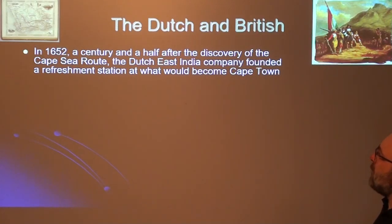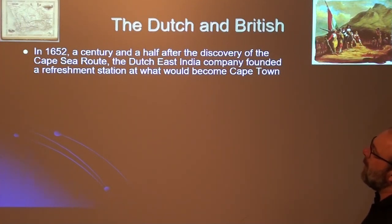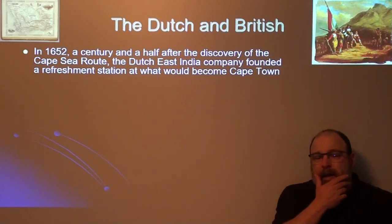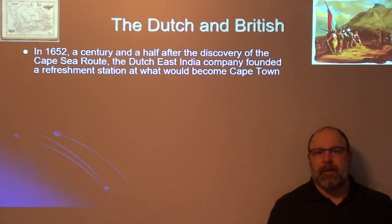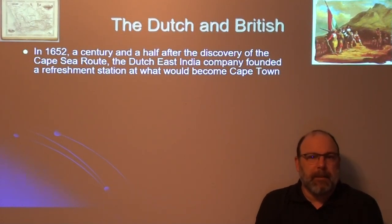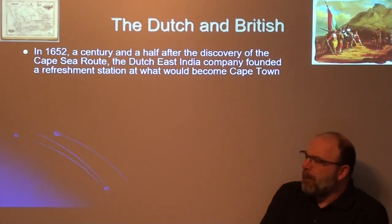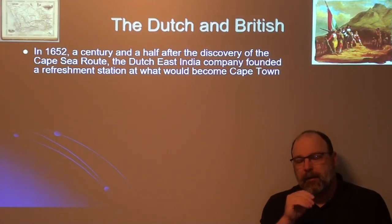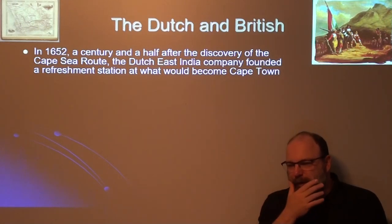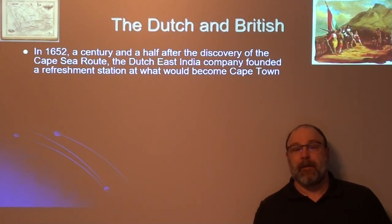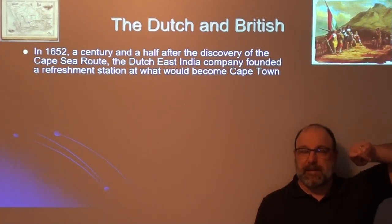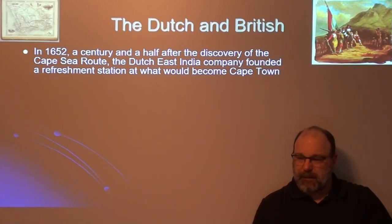In 1652, a century and a half after the discovery of the Cape Sea Route, the Dutch East India Company founded a refreshment station at what would become Cape Town. 1652 is pretty early in the colonial experience. The Dutch were really quite interested in Indonesia, and if you're traveling from the Netherlands all the way around Europe, past the Straits of Gibraltar, down Africa to the southern tip and then across to Indonesia, that is a heck of a long trip.